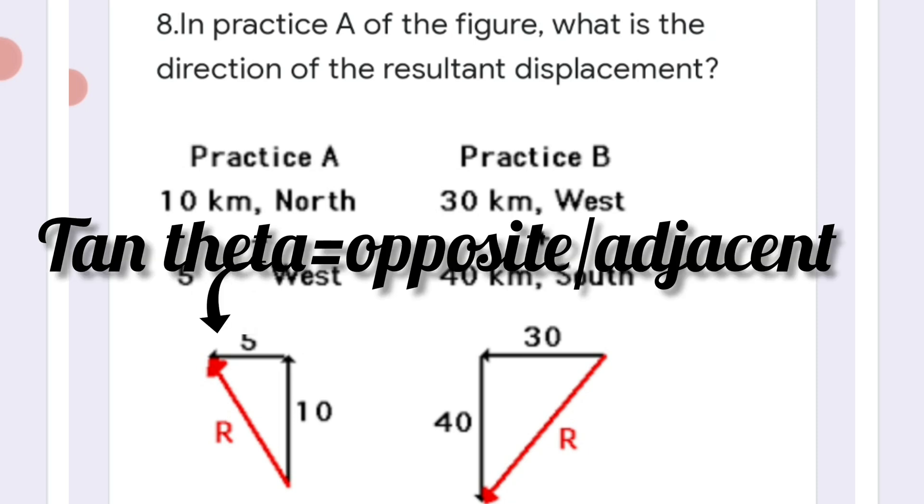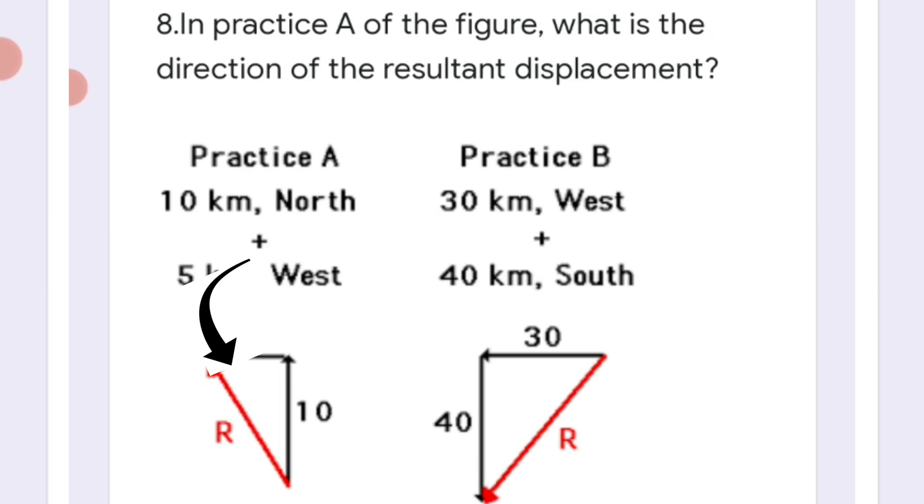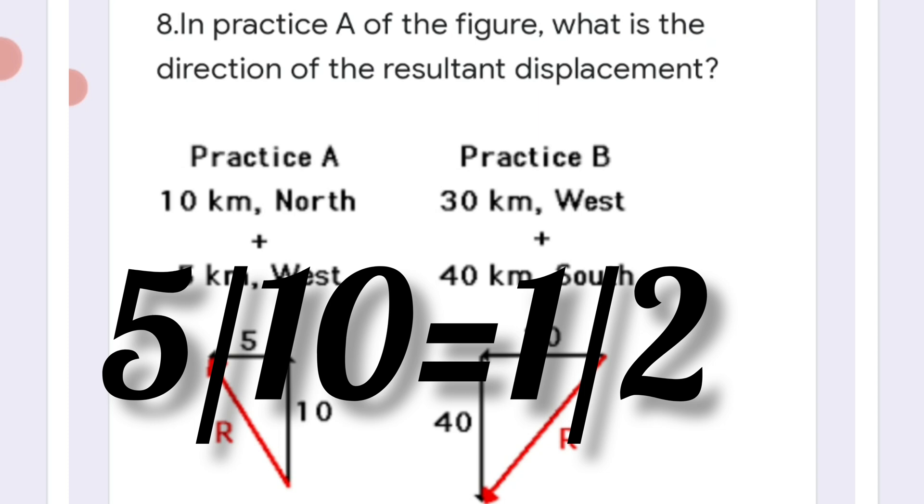So you can take either this angle or you can take that angle. If you are taking this angle, then as per the tan theta formula it will be opposite by adjacent, and opposite will be 5, adjacent will be 10, so it will be 0.5.